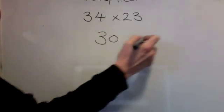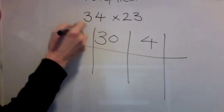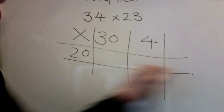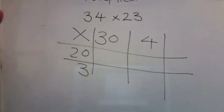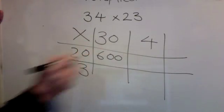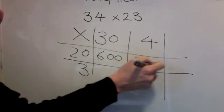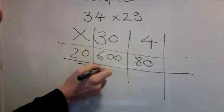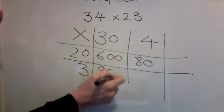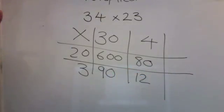Here's the answer. 30 and 4 in a grid multiplied by 20 and 3. 2 times 3 is 6, zero, zero. 2 times 4 is 8, zero. 3 times 3 is 9, zero. 3 times 4 is 12, no zeros.